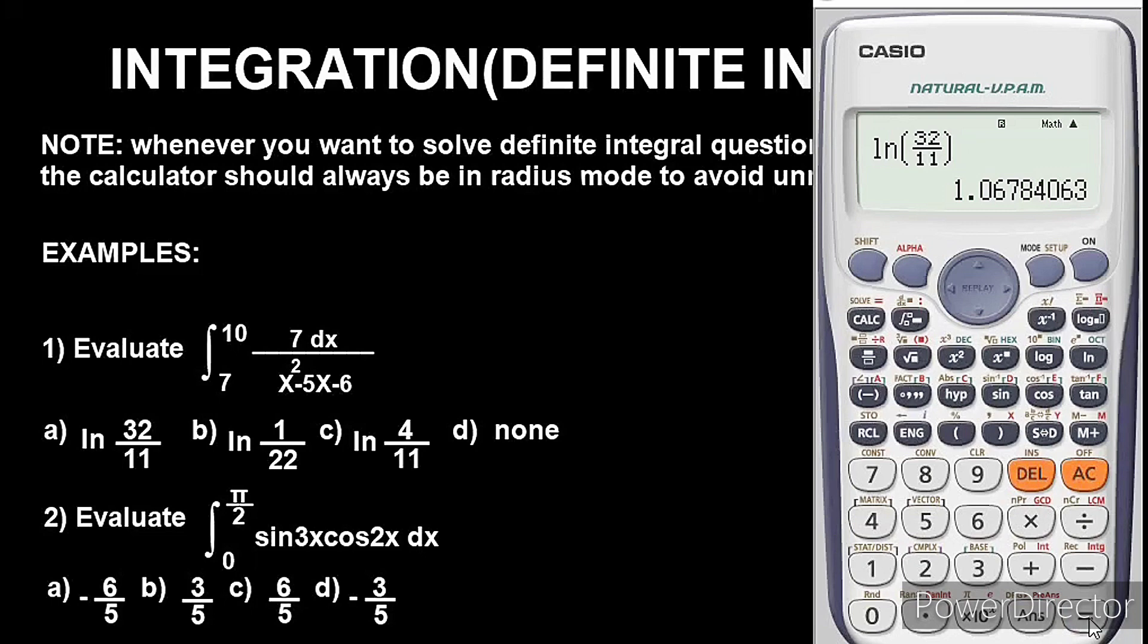1.0678, okay so this option a is the answer. No need evaluating option b and c since option a gave us the exact value we got when we did the integration for this question. So option a is the answer.